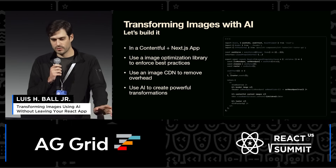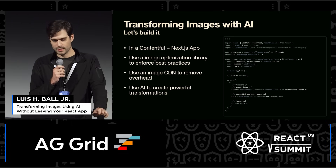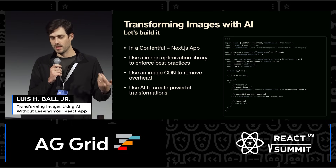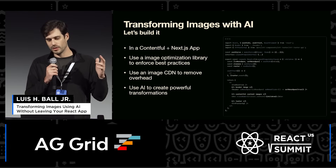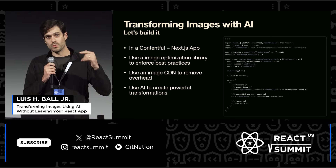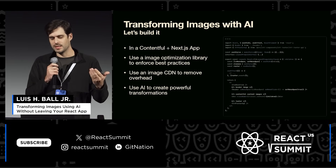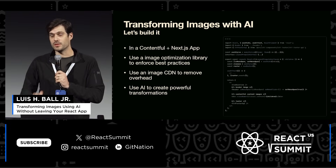So let's take a look at how you could actually use this in your applications. We're going to have a Contentful Next.js app. It's going to use an image optimization library, an image CDN to remove all that overhead, and we'll leverage the CDN's AI parameters to do some fun transformations.